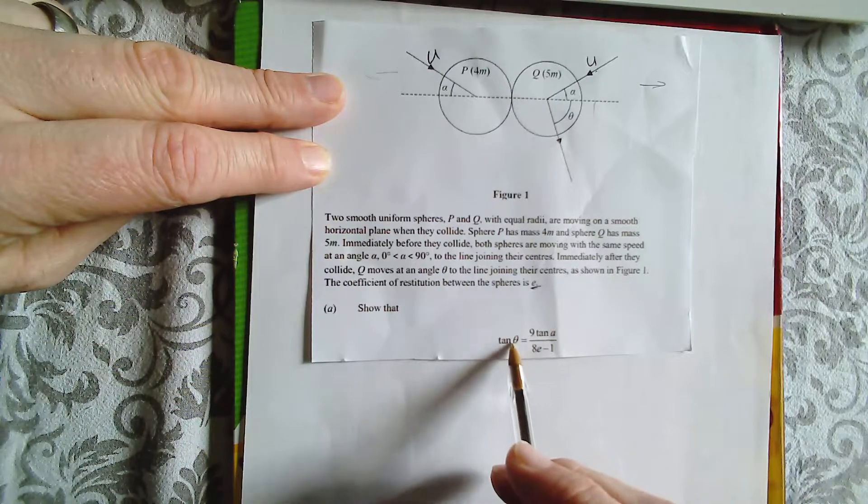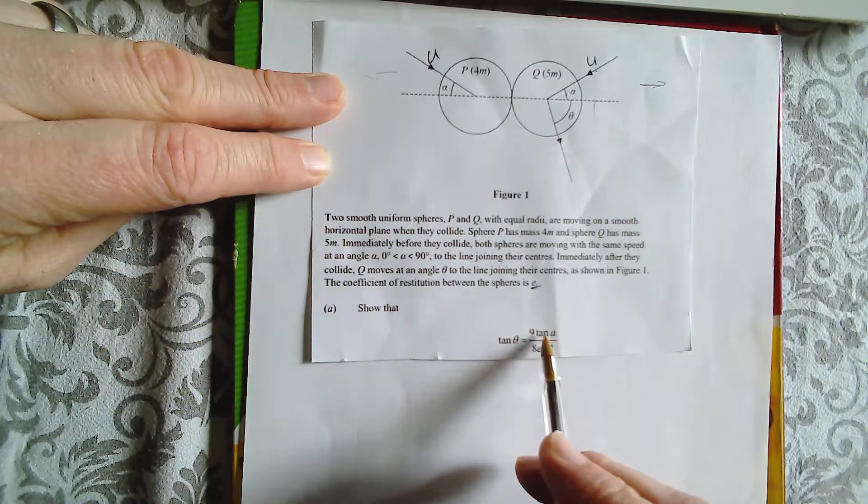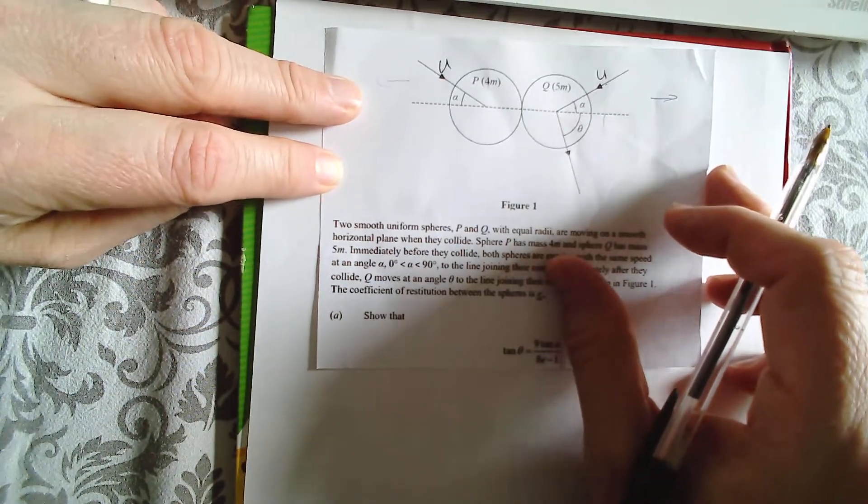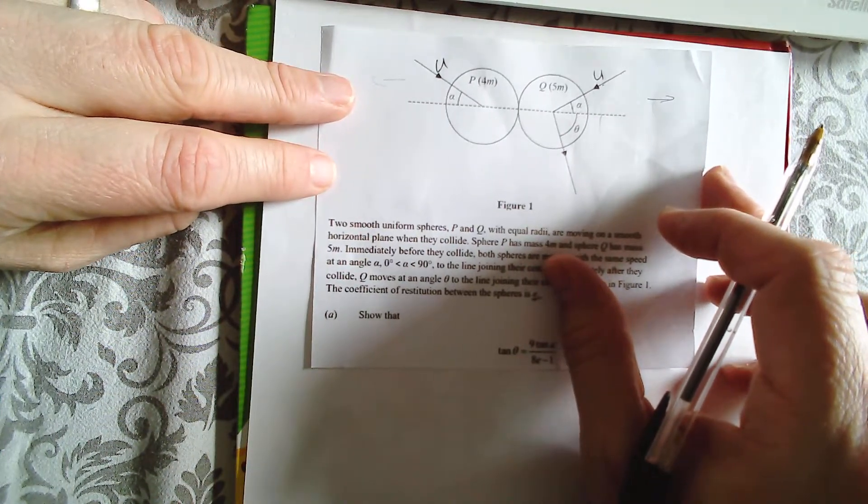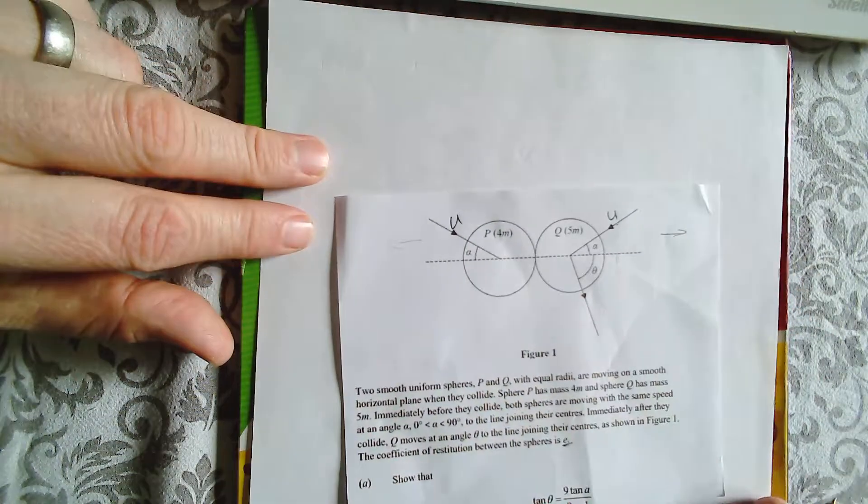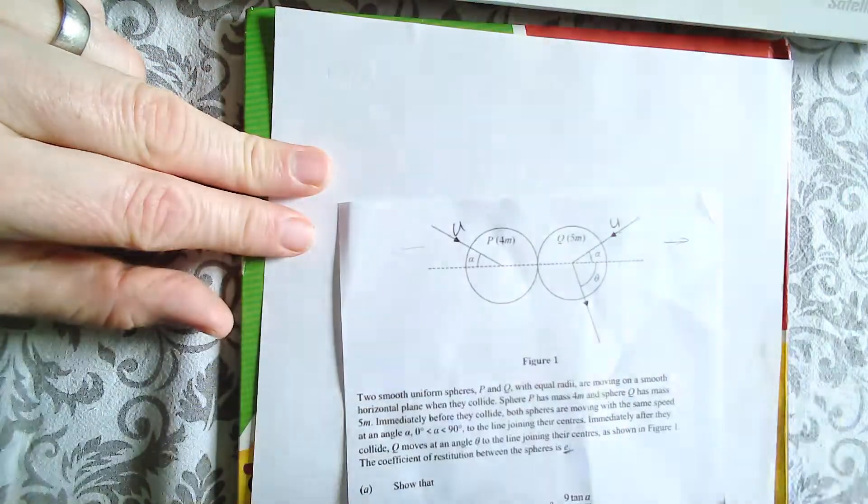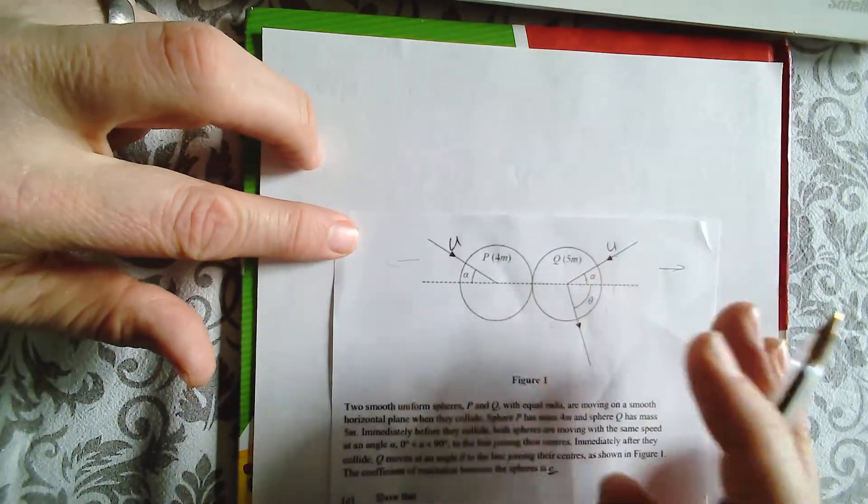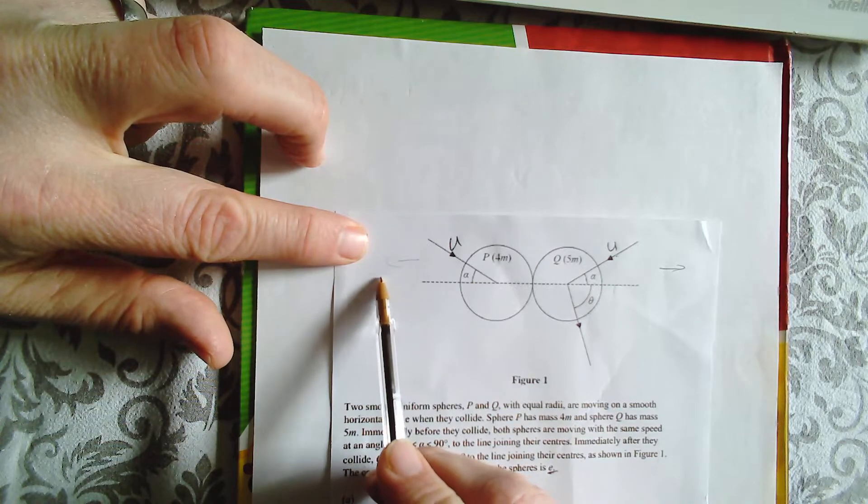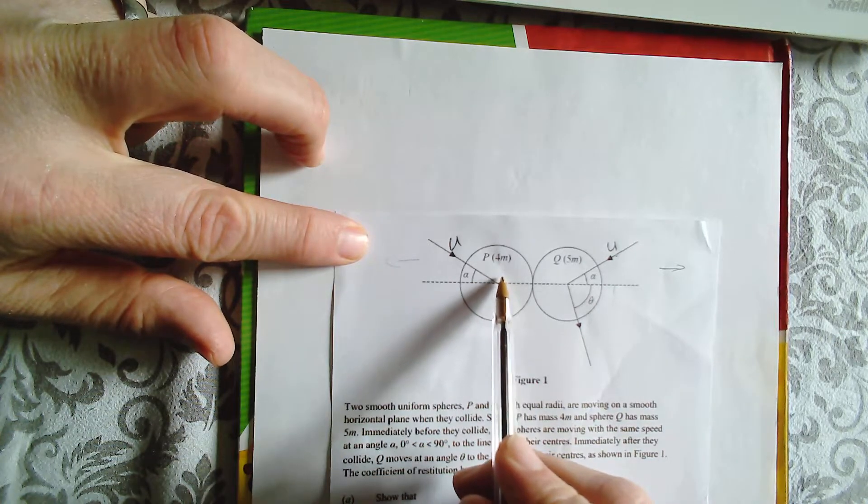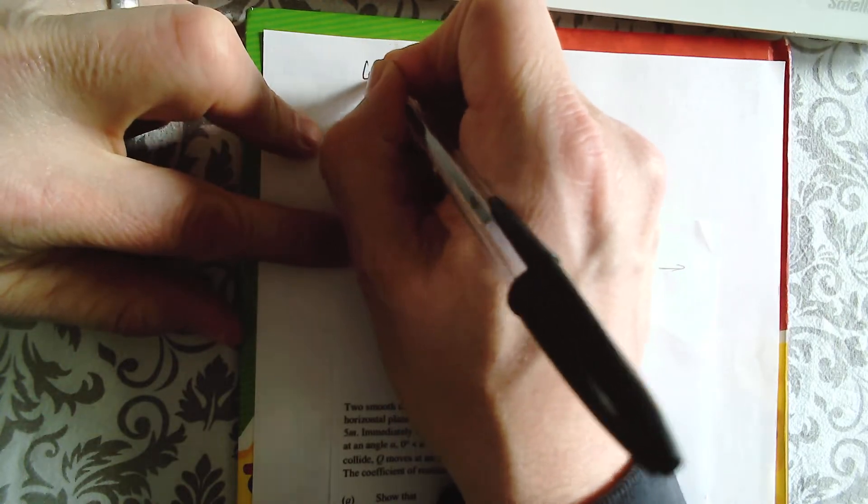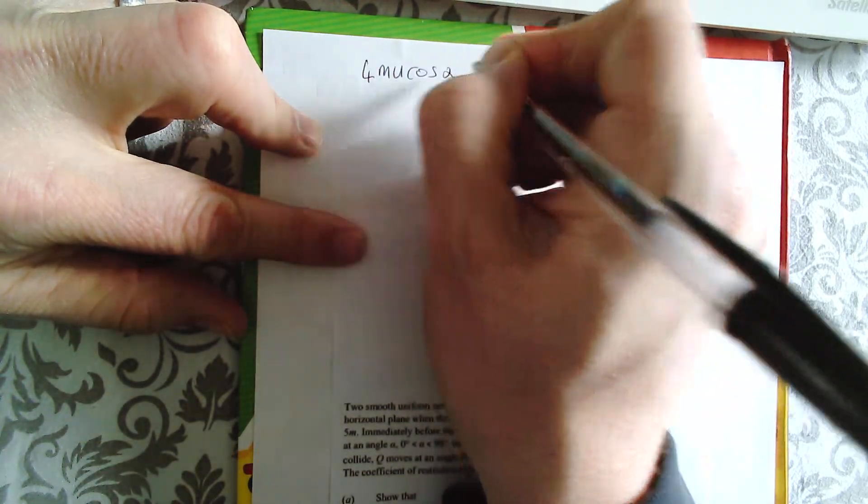Now we have to show that tan theta equals 9 tan alpha over 8E minus 1. So there's a lot of information there. So we're going to work through this step by step. I'm going to show you the steps. Now first of all, we consider along the line of centres the conservation of momentum. So this is moving, P is moving this way at U cos alpha. So it's going to have a momentum of 4m U cos alpha.